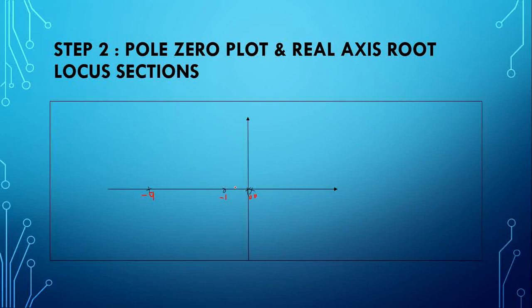Now, real axis root locus section. Between certain sections, if we take the right-hand side and the total number of poles and zeros are even in count, that is not a root locus section. Taking a test point between -1 and 0: to the right, the total number of poles and zeros are odd in count — 1, 2, 3 — so this section is a real axis root locus section. The section from -1 to -9 is the real axis root locus section.